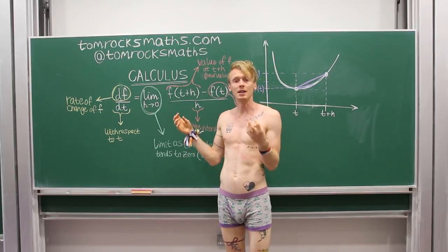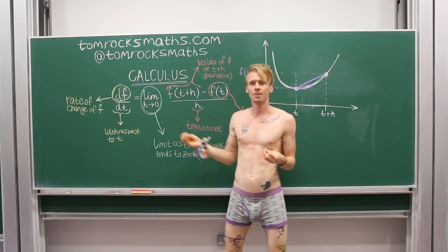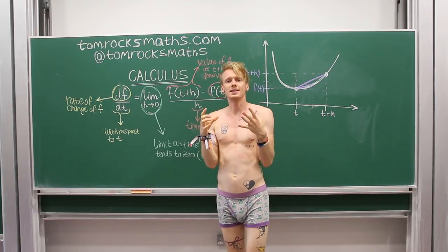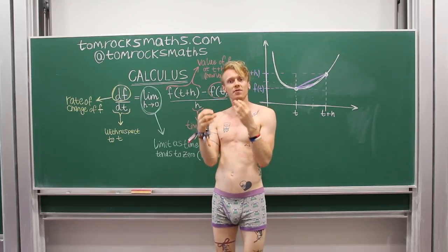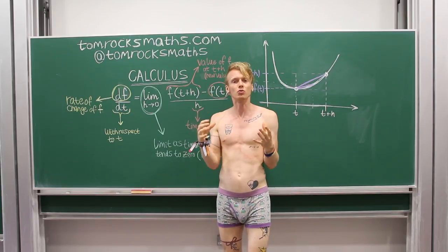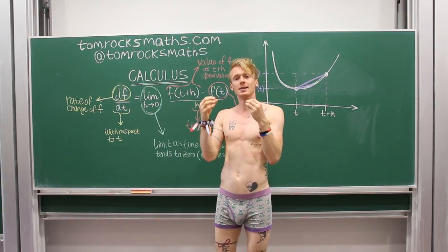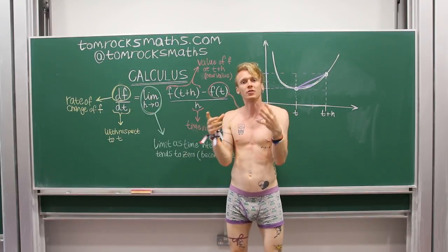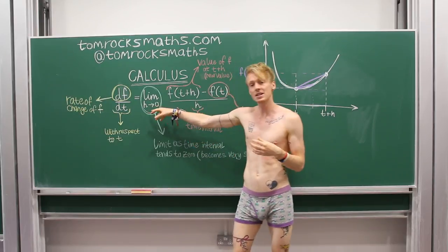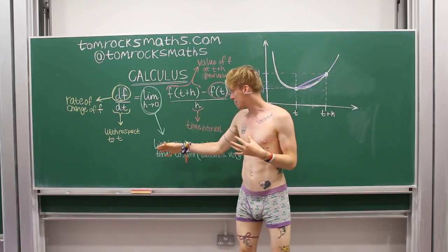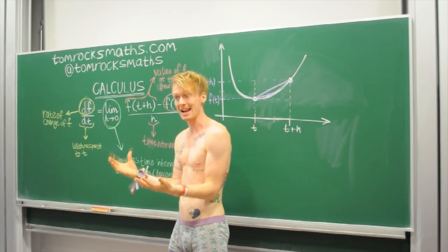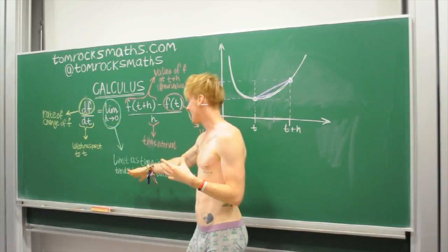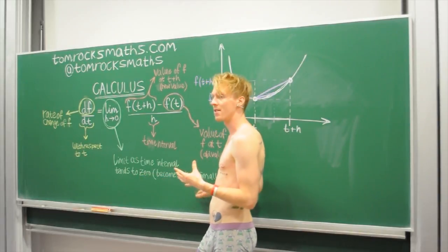Moving to the right-hand side of the equals, we have the limit function. L-I-M, lim, that means take the limit. Taking a limit is a mathematical function, very well-defined mathematically. This bit here is telling you to follow those rules. The h arrow zero bit is telling you that your time interval, which is h, is tending to zero. So you're taking the limit as h tends to zero, or as h becomes very, very small.